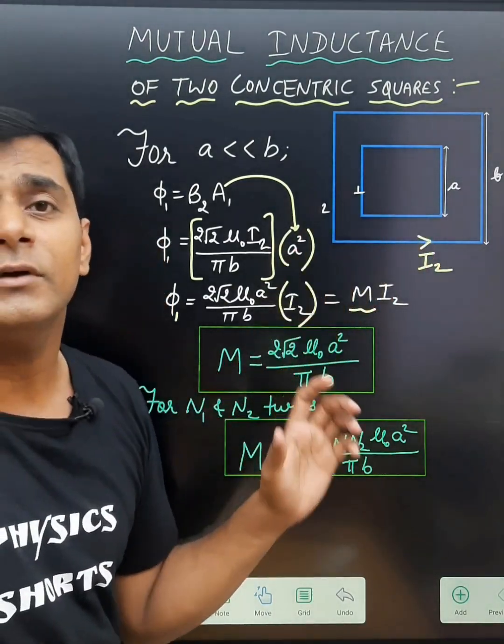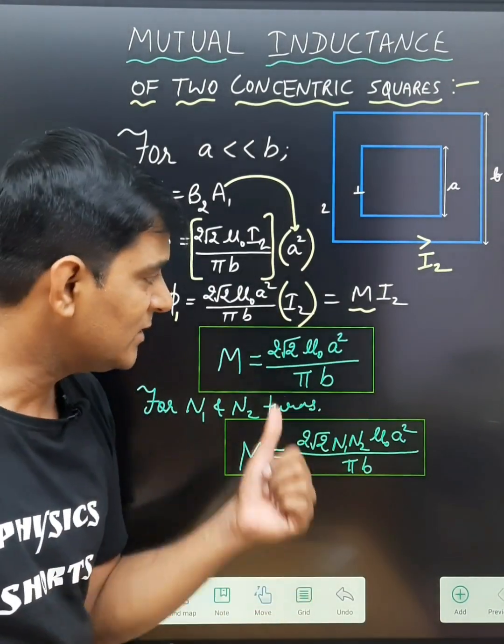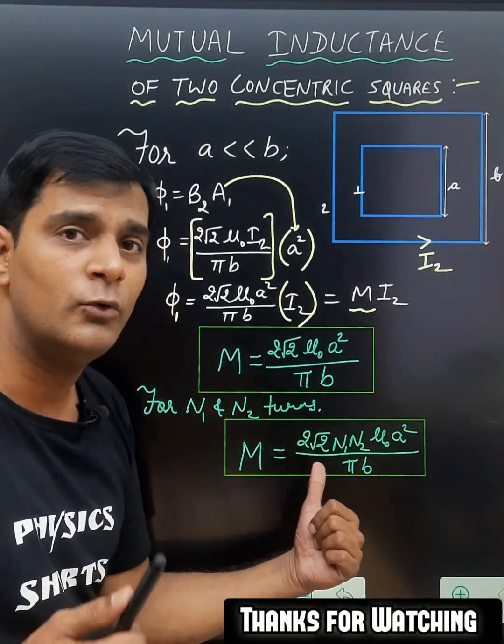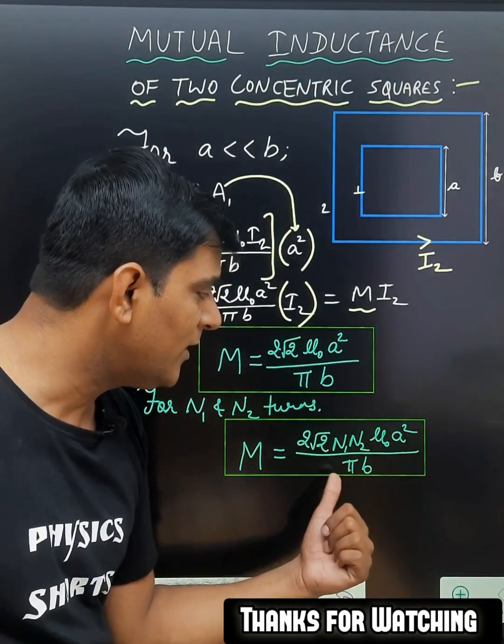If there are N1 and N2 number of turns in the first and second coil, then this expression becomes M equals 2√2 N1 N2 μ0 A² upon π B.